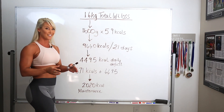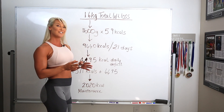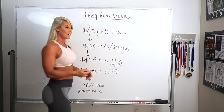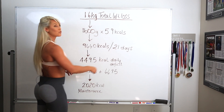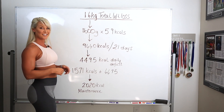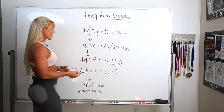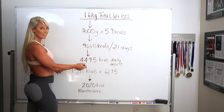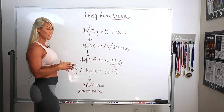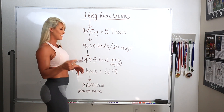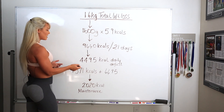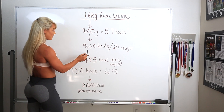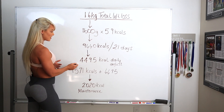Now what we need to do is work out what the deficit was per day. I was dieting for a period of 21 days — three weeks, same thing. If we convert that to days, we can see what my daily calorie deficit is. There's a reason we're working towards a daily calorie deficit — we'll come to that in a second. For each of those days, I was in a deficit of 449.5 kilocalories.